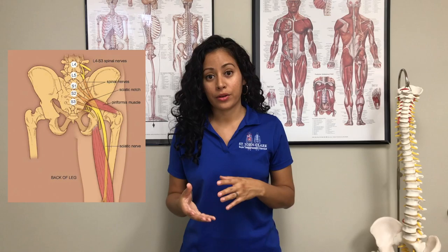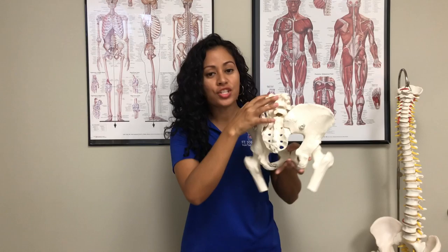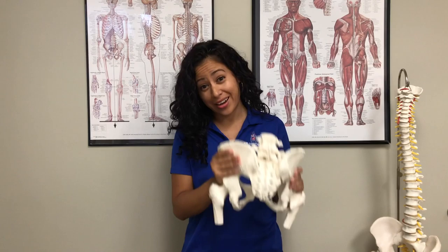Because sciatica is a collection of symptoms, it means there are different levels and different areas that could be affecting the actual sciatic nerve. Because of where the nerve roots exit, if there's a change in the lumbar spine, in the sacrum, or even in the muscles that connect to the deep hip, any change in those structures can lead to an impingement of the sciatic nerve, leading to sciatica.